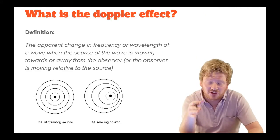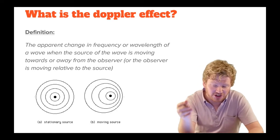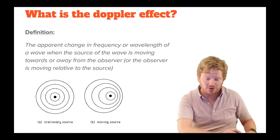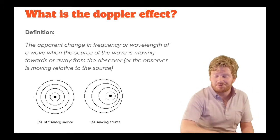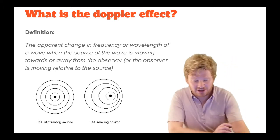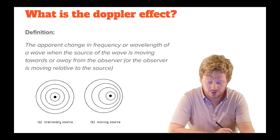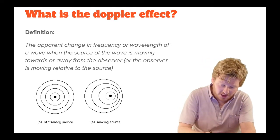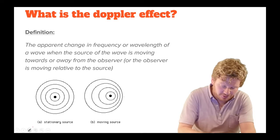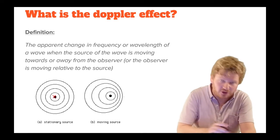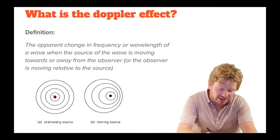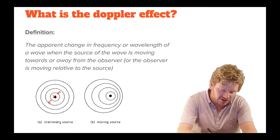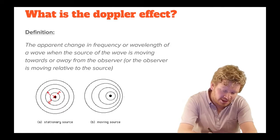The dry definition, and I do suggest that you learn it, is it's the apparent change in frequency or wavelength of a wave where the source of the wave is moving towards or away from the observer, or the other way of saying it is if the observer is moving relative to the source. We see lots of examples of this on the slide here. This is a stationary source, so nobody's moving, and we see the waves spreading out equally in all directions. Whatever distance I measure in any direction along the wave is the same.